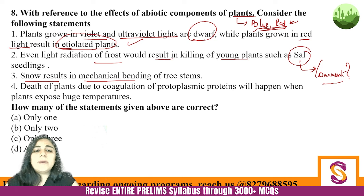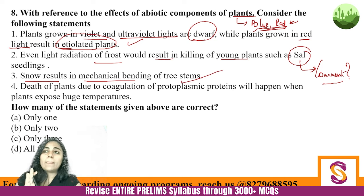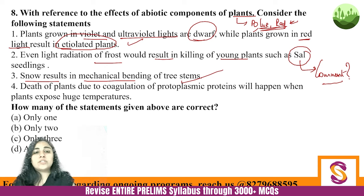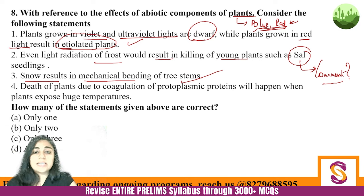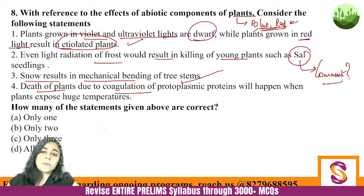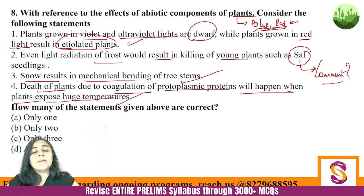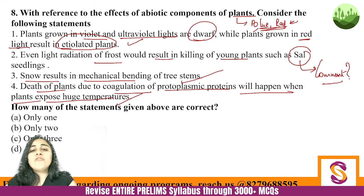Snow results in mechanical bending of tree stems — yes, this is correct. When trees are covered with snow, it looks very beautiful, but it adds a lot of load to the tree, leading to bending of tree stems. And death of plants due to coagulation of protoplasmic proteins will happen when plants are exposed to very high temperatures — this is also absolutely correct. That huge temperature exposure leads to death of plants. So the answer here is D — all four statements are correct.